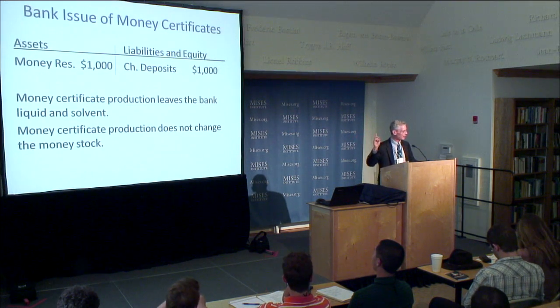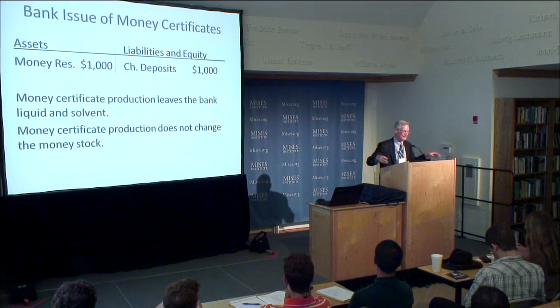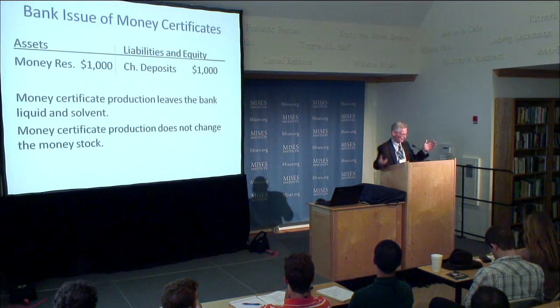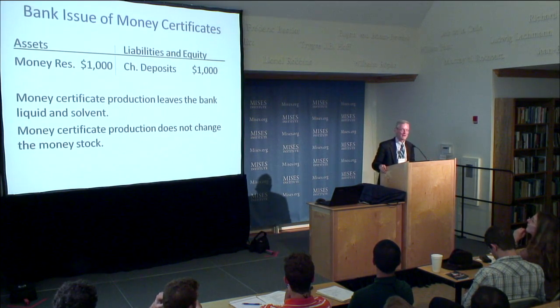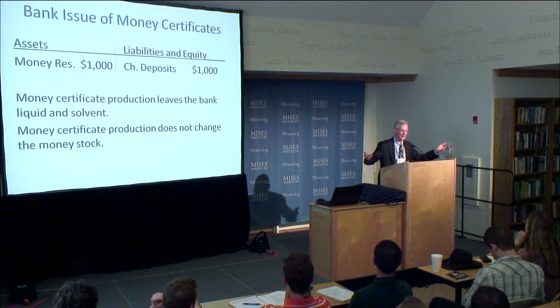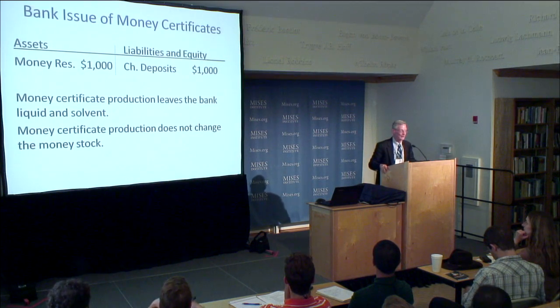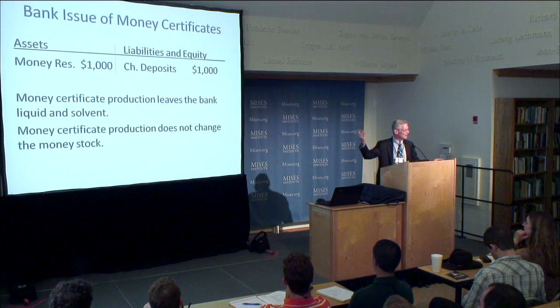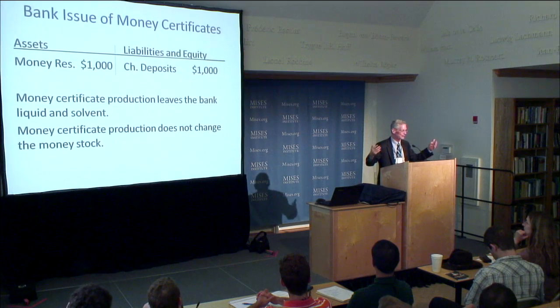Mises calls this matching of the time structure of assets and liabilities the golden rule of finance. There are two important financial aspects of a balance sheet: liquidity, which we're discussing now, and solvency. The transaction also leaves the bank solvent because the actual market value of assets and liabilities correspond. If you're holding money proper, the nominal value can't go down. And since a 100% reserve bank isn't issuing liabilities in excess of assets, it's perfectly solvent and liquid. The issue of money certificates doesn't change the money stock in society — banks have no independent ability to influence the overall stock of money.